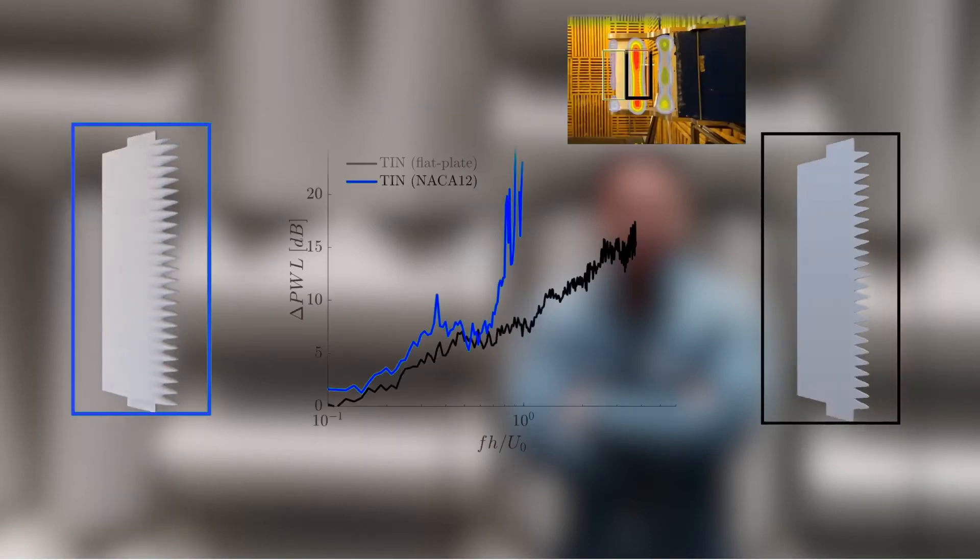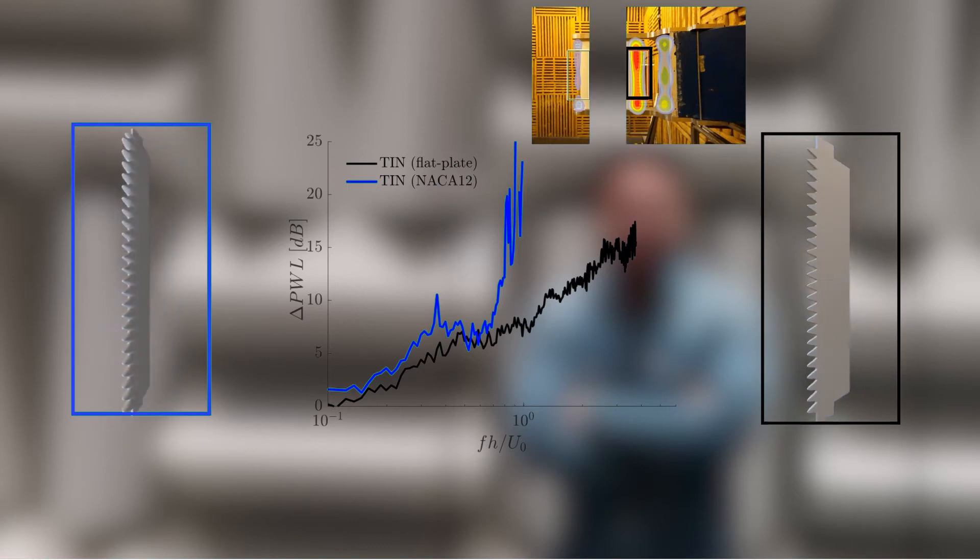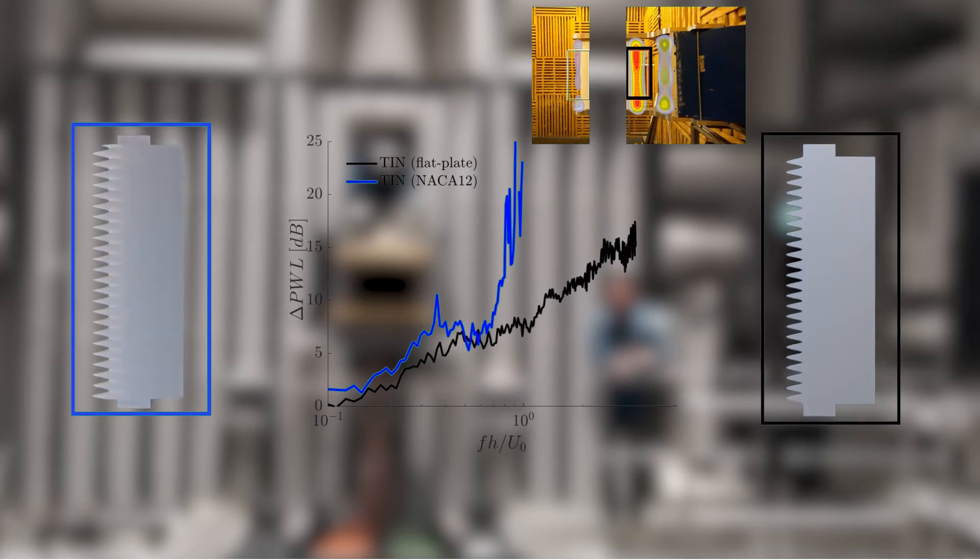Beam forming maps propose also that turbulence interaction noise reductions extend linearly over wider low and middle frequency range after subtracting trailing edge noise. This promises even higher noise reduction performances if the trailing edge noise can be reduced also.